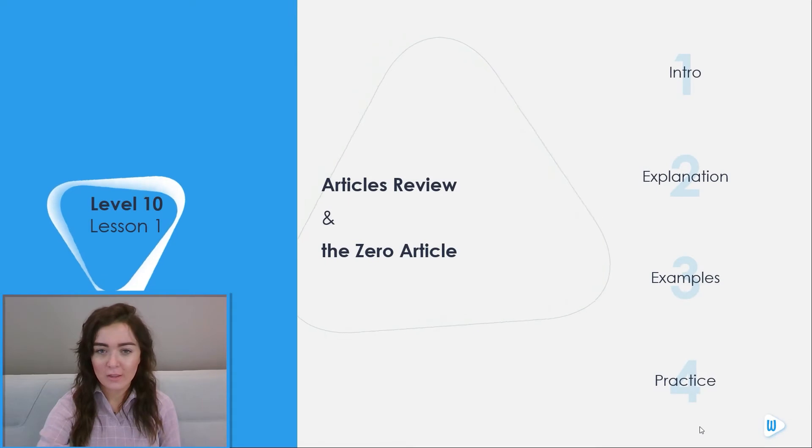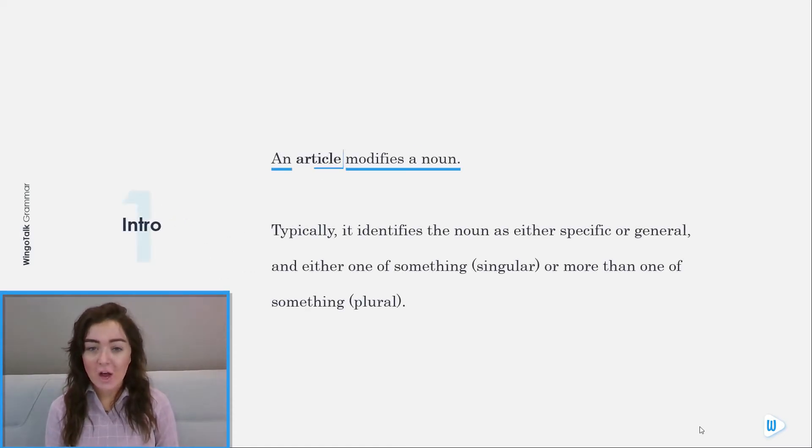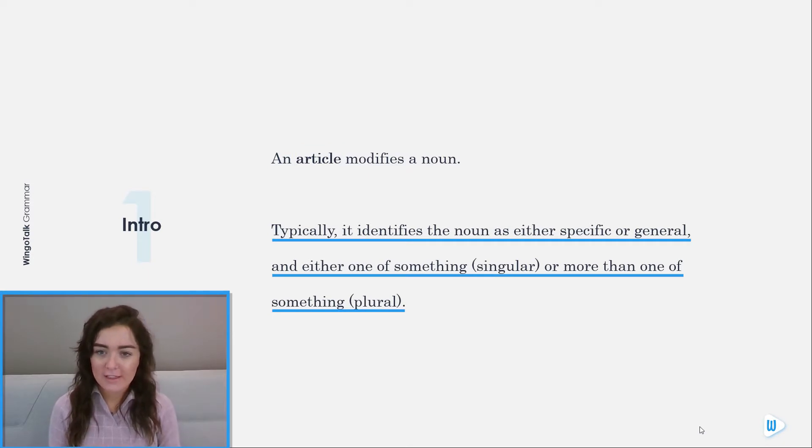Level 10 Lesson 1: Articles Review and the Zero Article. An article modifies a noun. Typically, it identifies the noun as either specific or general, and either one of something singular or more than one of something plural.